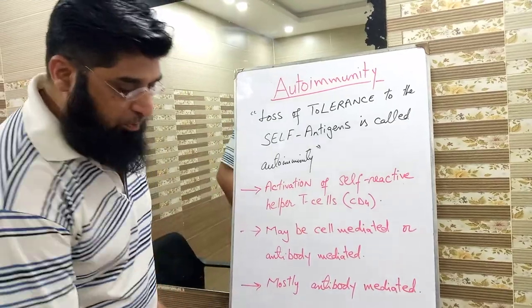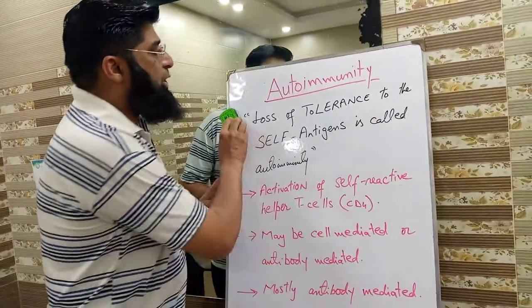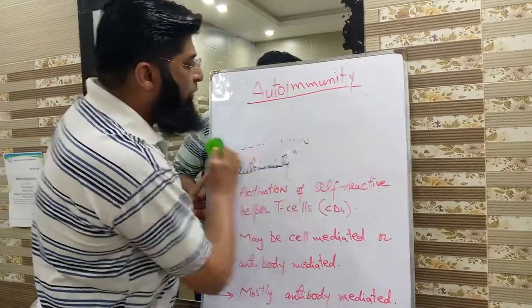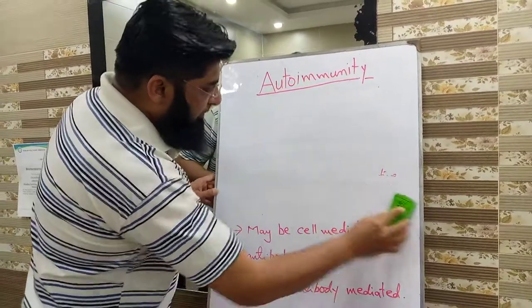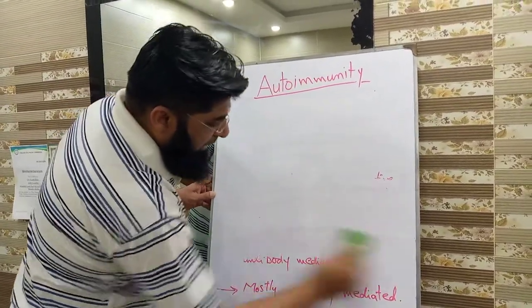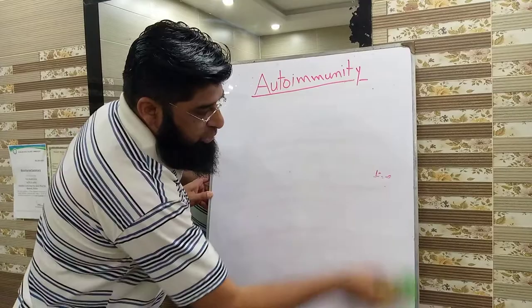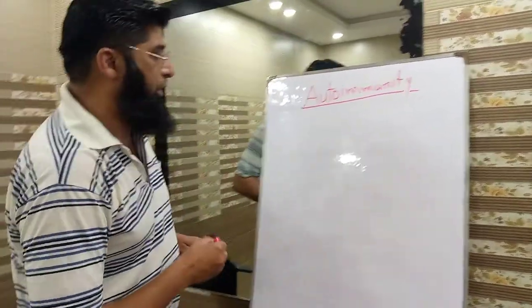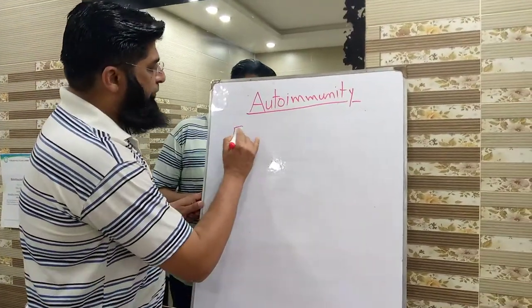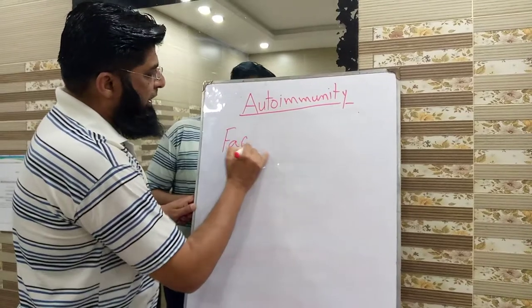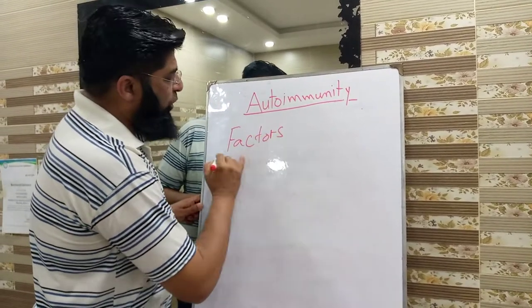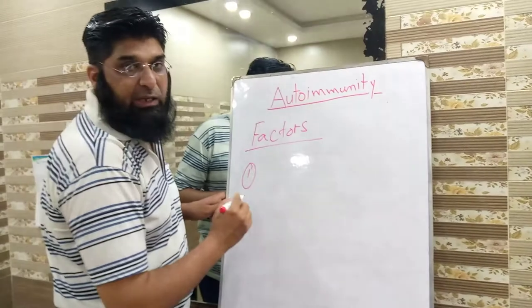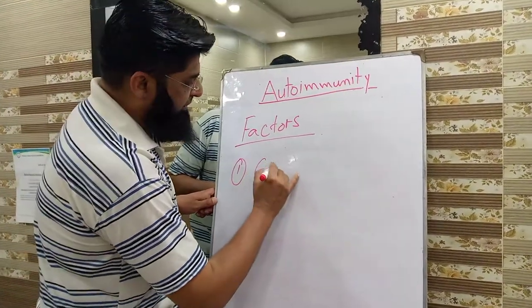Most often this immune response in autoimmunity is antibody-mediated. Now we move towards the factors which affect autoimmunity. Number one important factor is genetic factors.